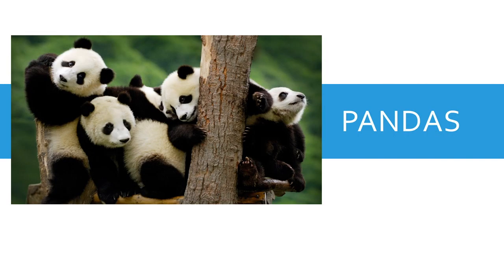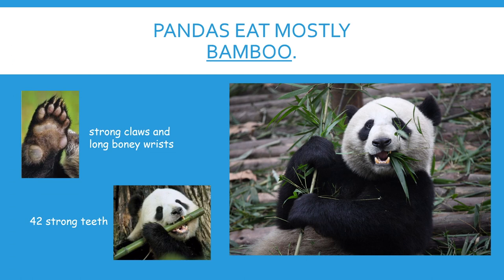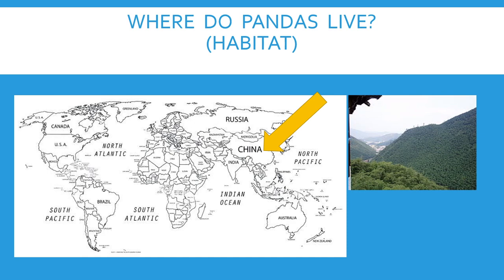Let's review and listen to a couple new things about pandas, and then share this information with your family. Do you remember that panda bears eat mostly bamboo? They spend about 14 hours a day eating. The other time is spent sleeping off and on. They also have strong claws and long bony wrists that help them grab the bamboo and hold on to it when they're eating. They have 42 strong teeth in their mouth used for biting and chewing. We live here in North America — we need to travel around the world and go to China to find the panda bears.